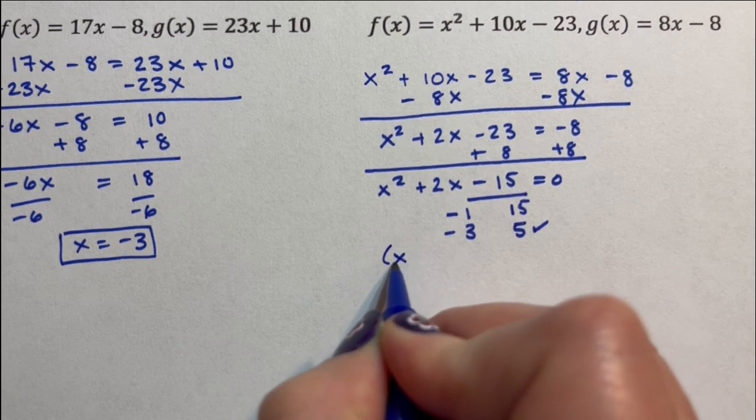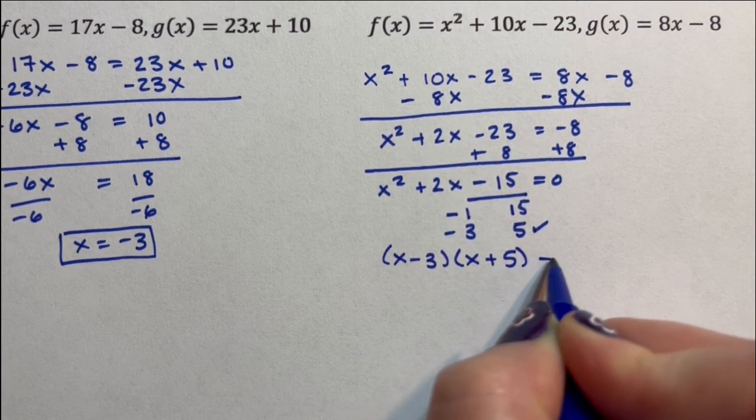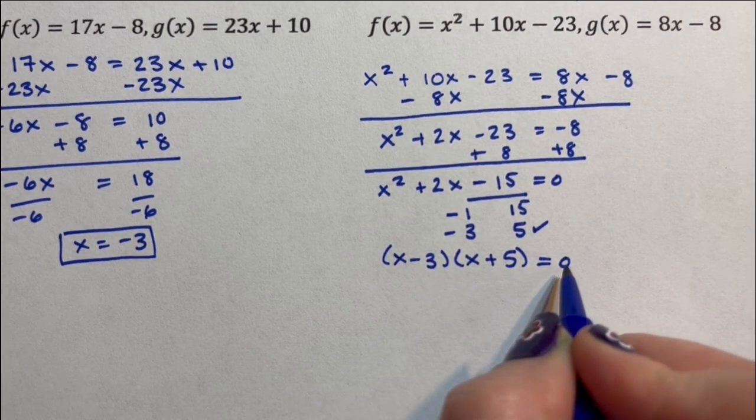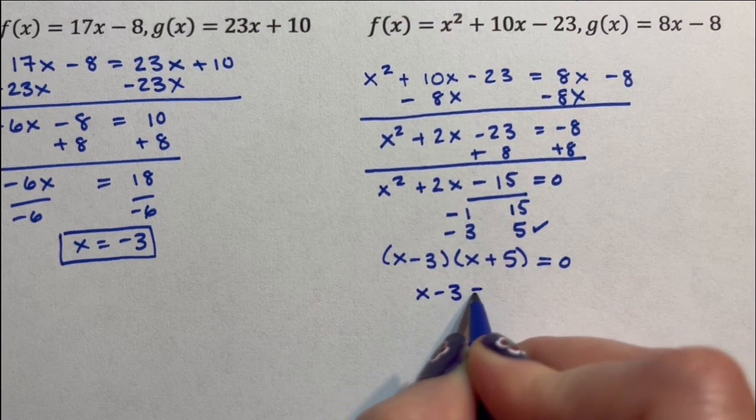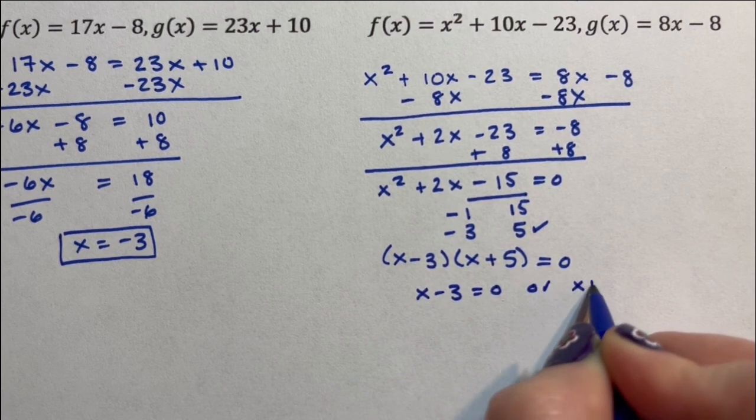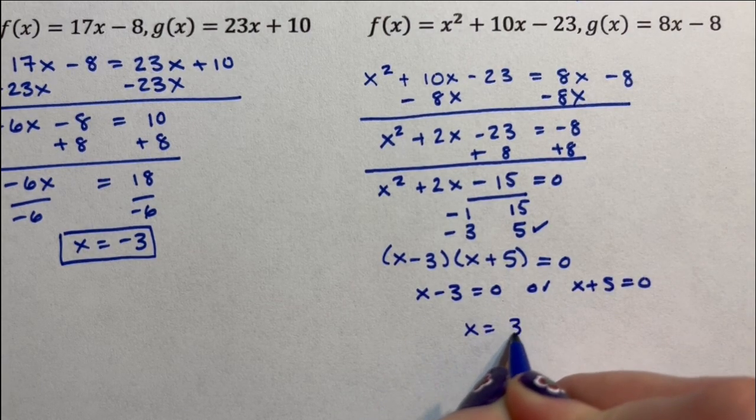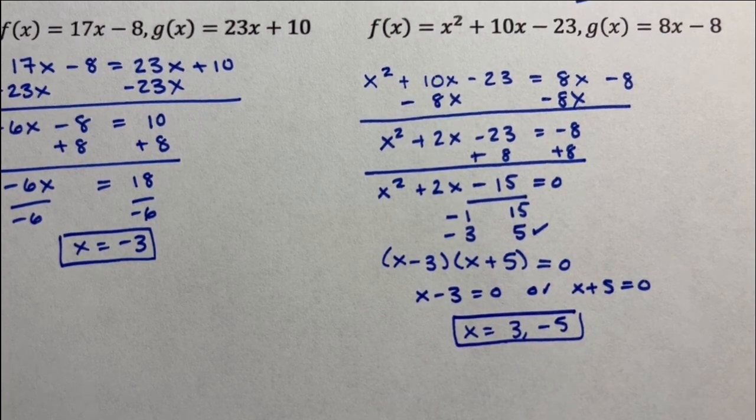So I have x minus 3 times x plus 5 equals 0. When two numbers multiply to 0, one of them has to be 0. So it's either x minus 3 equals 0 or x plus 5 equals 0. So x is equal to 3 or negative 5. There we go.